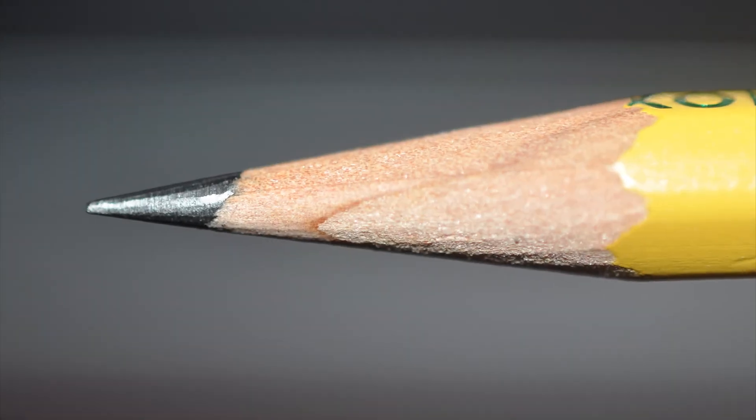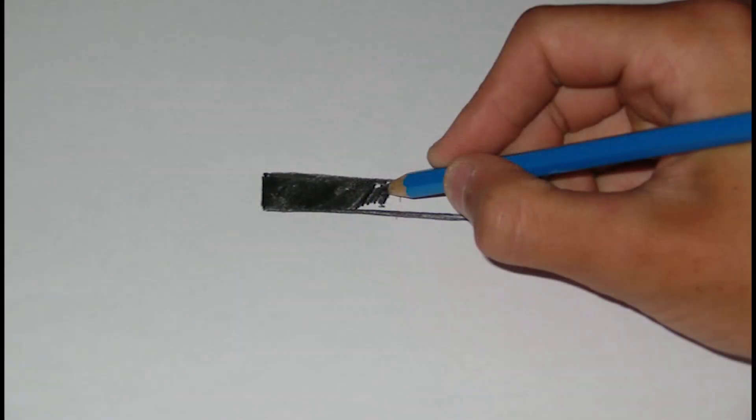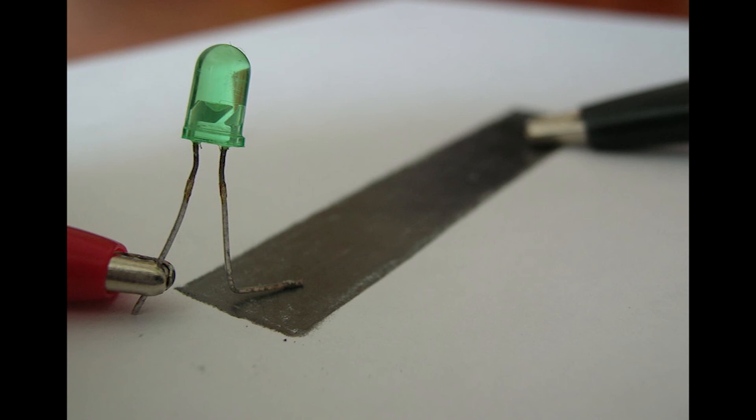Graphite, as found in standard pencil lead, makes for a surprisingly effective variable resistor. Simply draw a dark line on a piece of paper and wherever we might need a resistor, like for an LED as shown in this picture, we can just use pencil lead instead.